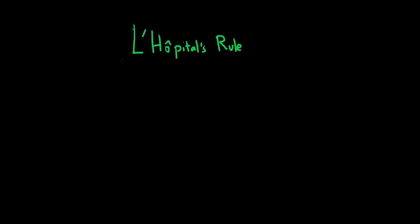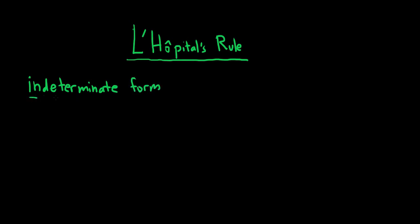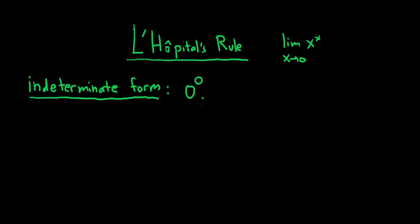L'Hopital's Rule is a rule that helps you take limits. First of all, there's something called an indeterminate form. I always think it's 'indeterminate' so you can't determine it — I'm pretty sure that's not why it's called that, but it makes sense. One of these forms is 0 to the 0. These are forms that come up in limits. For example, if you were taking the limit as x approaches 0 of x to the x, if you plugged in 0, you would get 0 to the 0 — that's an indeterminate form.